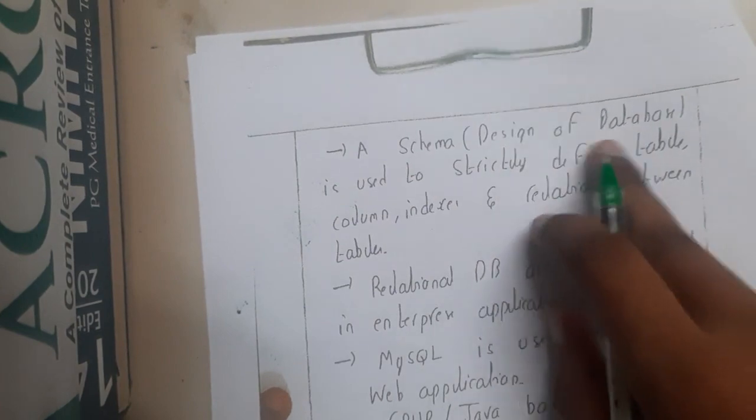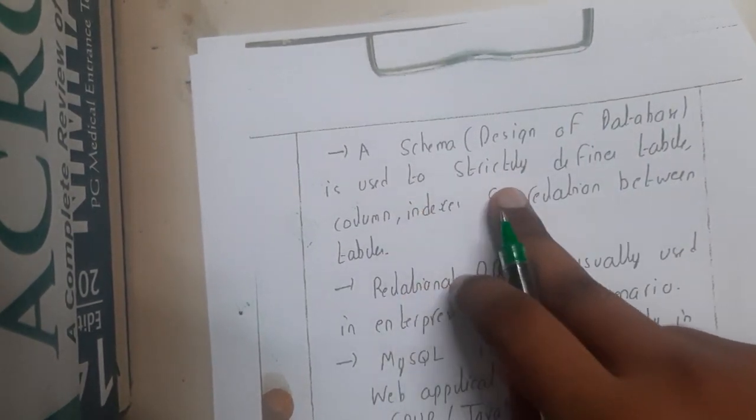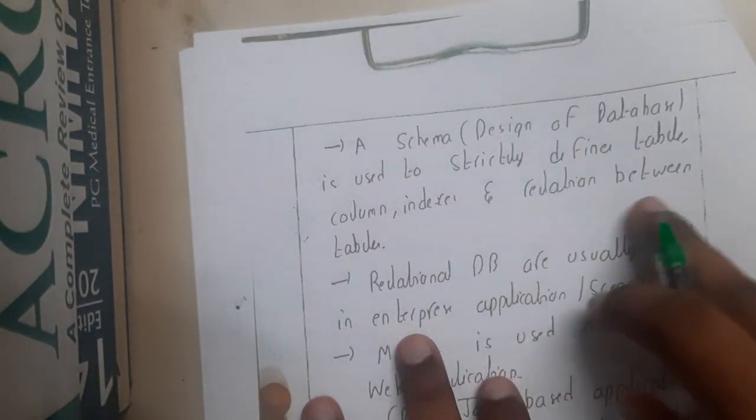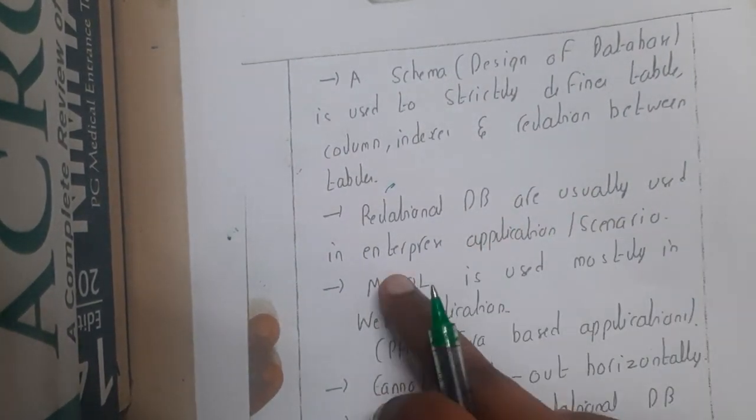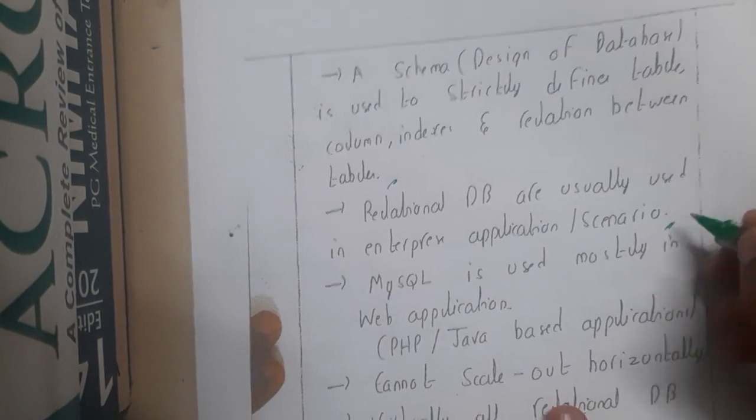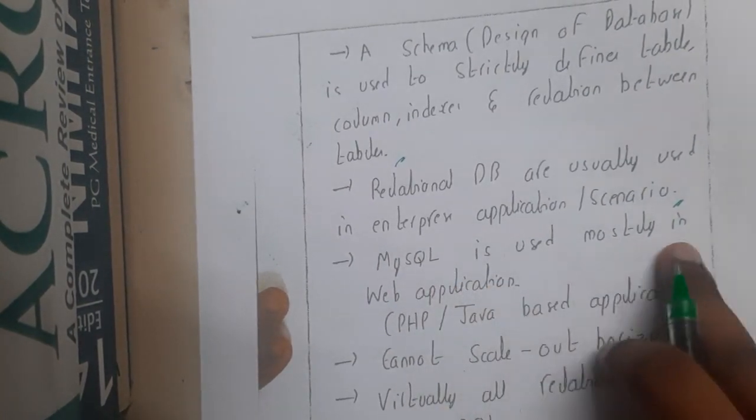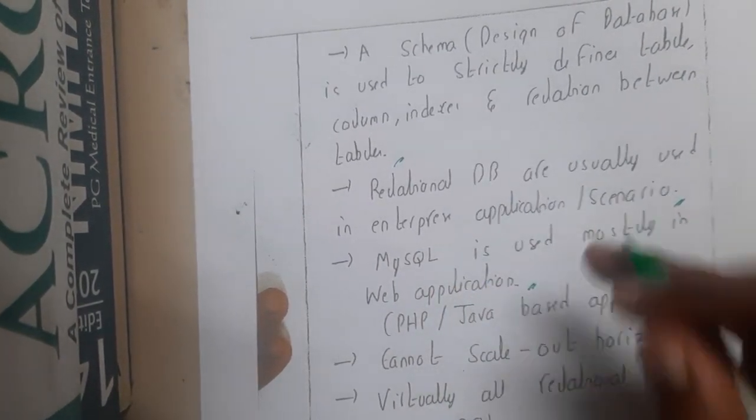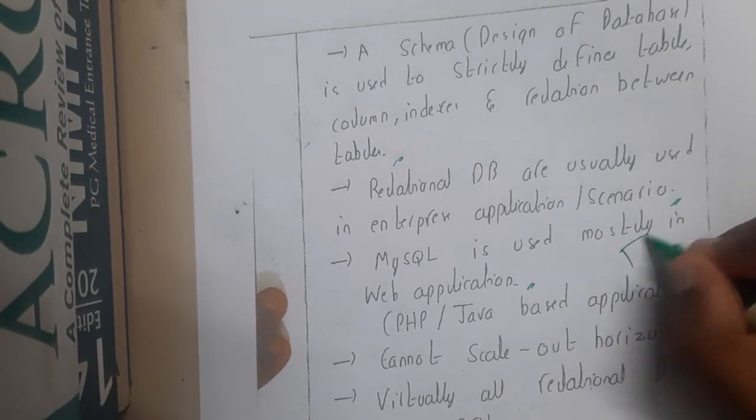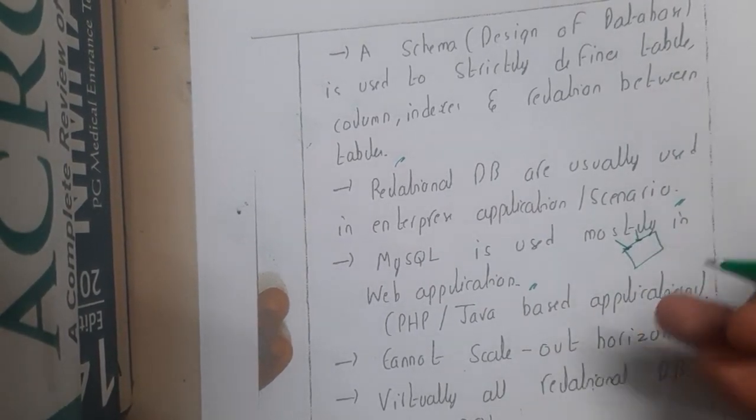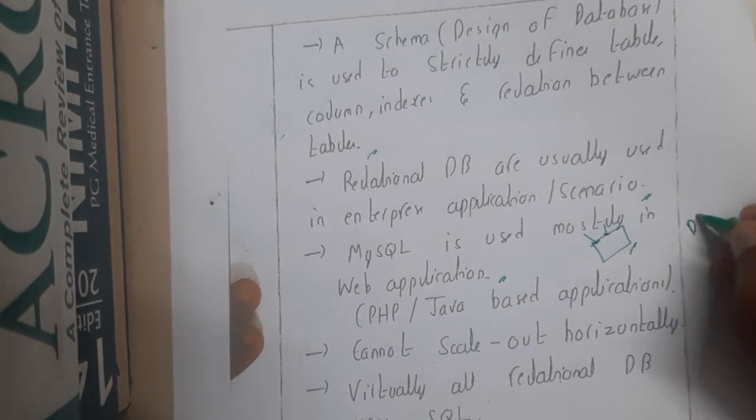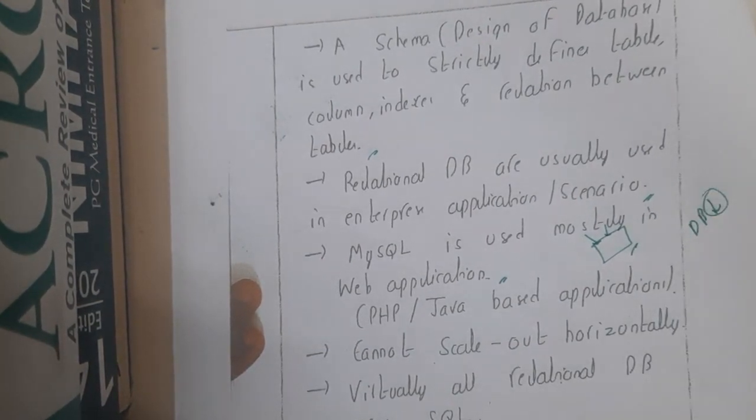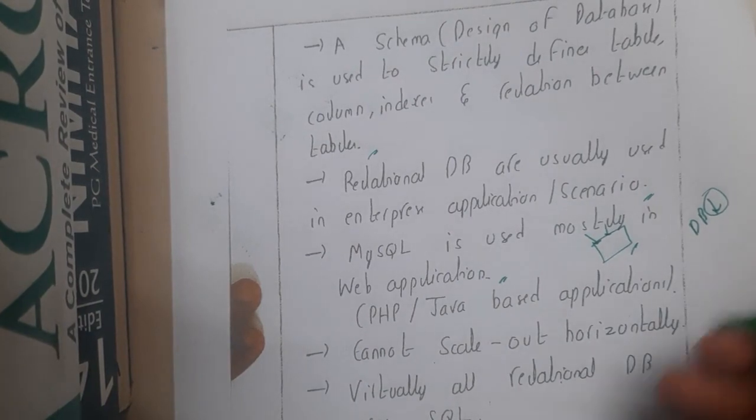A schema or design of databases is used to strictly define the table, column, indexes, and table definitions. Relational databases are usually used in enterprise applications or scenarios. MySQL is used mostly in web applications because the main way of storing data in web is using databases. Databases take really less amount of space when compared to normal text files or any other files.